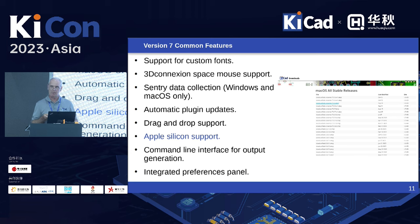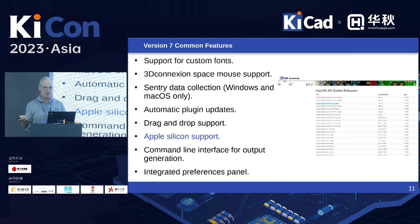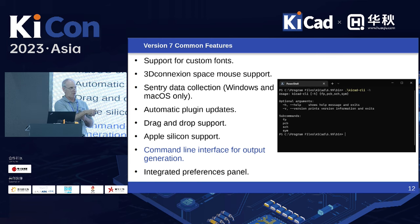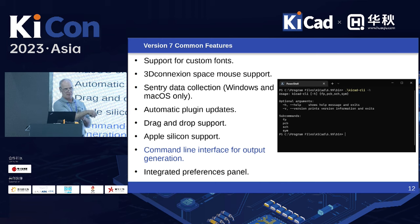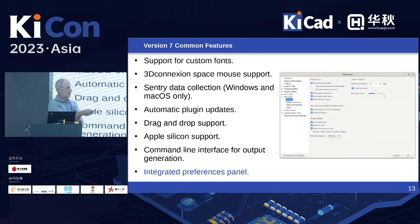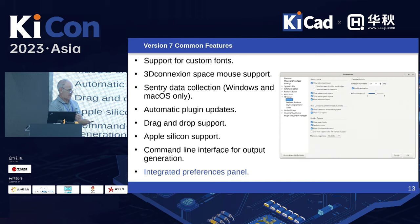For those of you with Apple M1 or M-series processors, we now produce a macOS package that includes both the ARM binaries and the x86 binaries. Starting in version 7 you can now generate most outputs on the command line, so if you want to automate output generation for your products rather than clicking manually, it's all scriptable through the CLI. We also integrated all preferences into one place — previously there was one for the board editor, one for the schematic editor, etc.